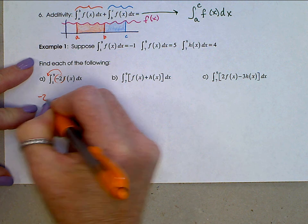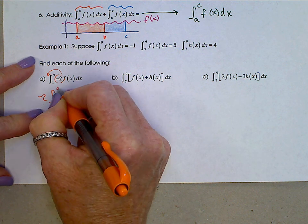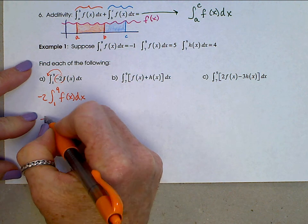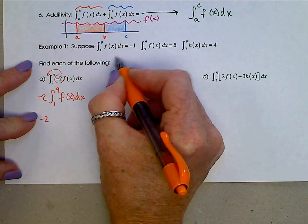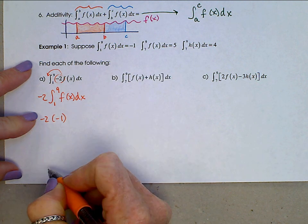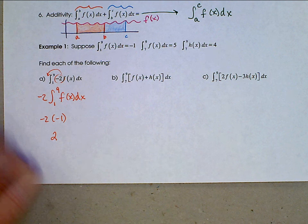So this is negative 2 times the integral from 1 to 9 of f(x) dx. And this integral from 1 to 9 of f(x) dx was given to us as a value of negative 1. So we have a 2.